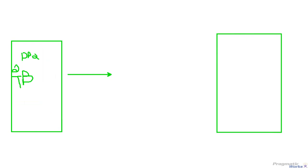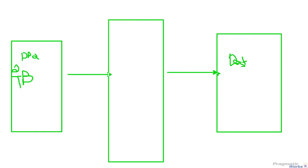If I want to get that two terabytes of data from server one to server two, think to yourself: what is the bare minimum that has to go between these servers? On a bare minimum, we have to have a network switch to get data from server one to server two.